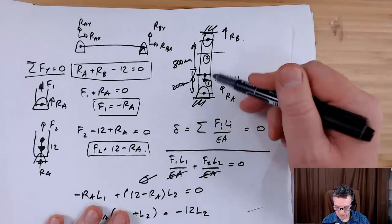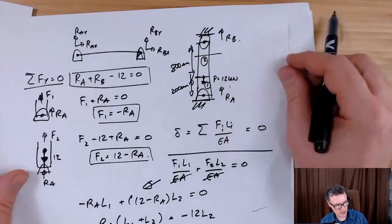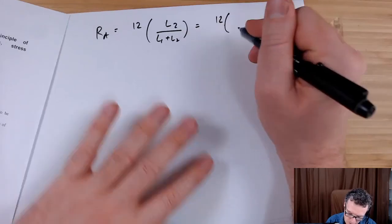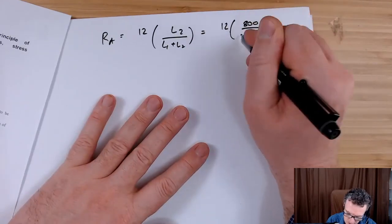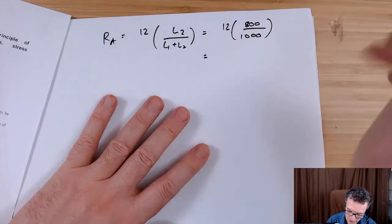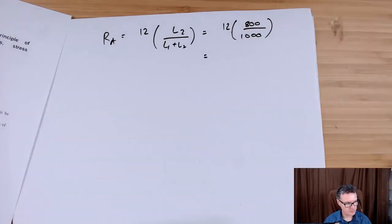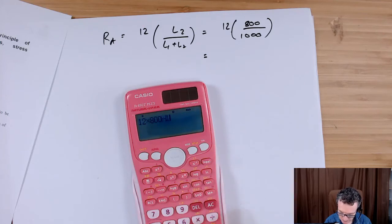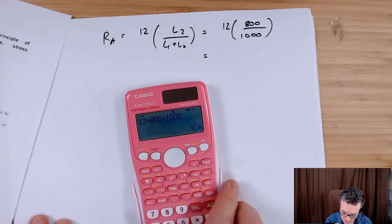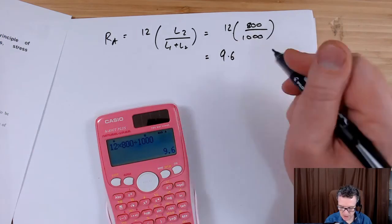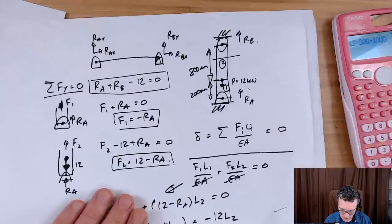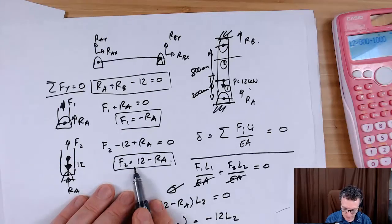So we can see that L1 plus L2 is going to be the total length, so for my case, total length will be one meter, and L2 section is 800 millimeters. So 12, let's work in millimeters, 800 divided by a thousand. So 12 gives me 9.6 Ra kilonewtons.